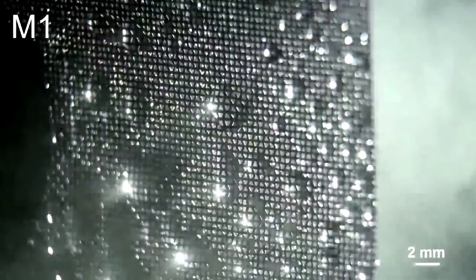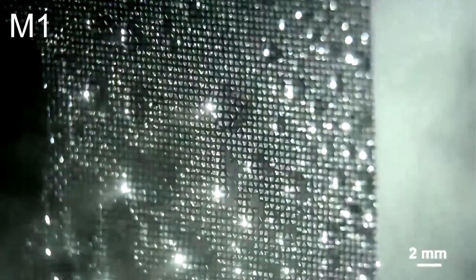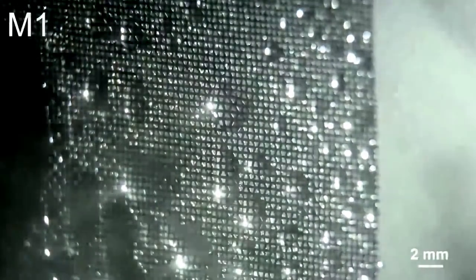If the wire mesh is too coarse, it cannot effectively capture water. But if the wire mesh is too fine, it gets clogged easily.